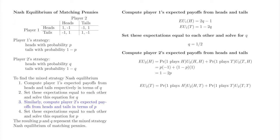When player 2 plays tails, the possible outcomes are heads-tails, which occurs when player 1 plays heads, and tails-tails, which occurs when player 1 plays tails. The probability of heads-tails is equal to the probability of player 1 playing heads, and the probability of tails-tails is equal to the probability of player 1 playing tails. The probability that player 1 plays heads is p, and when that outcome occurs player 2 receives 1. The probability that player 1 plays tails is 1 minus p, and when that outcome occurs player 2 receives minus 1. Player 2's expected payoff when playing tails is 2p minus 1.